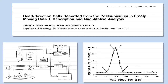As shown here, head direction cells in a circular environment — a cylinder with a cue card — have a very stereotyped response property. They fire as a function of head direction in the environment, showing this triangular function, which is shown in the bottom right as really one of the first examples of the quantification of this system.